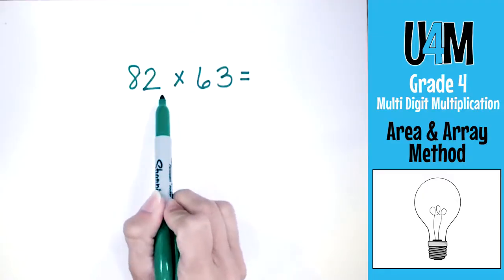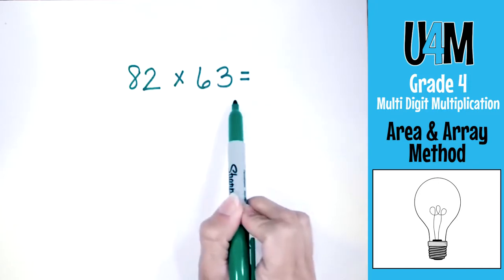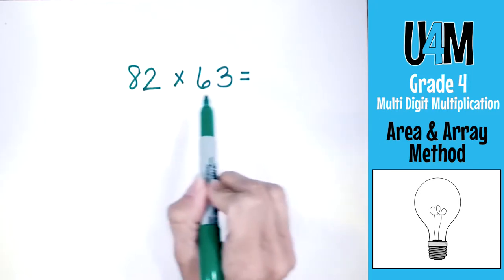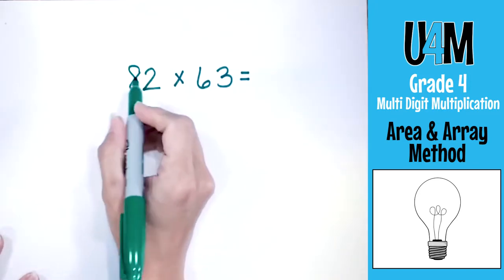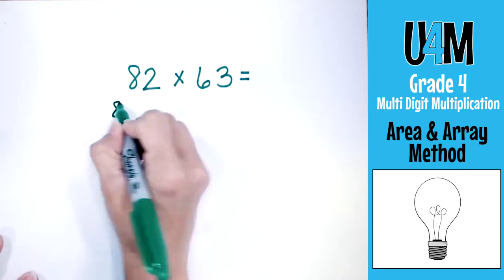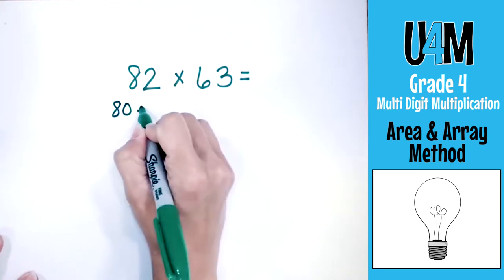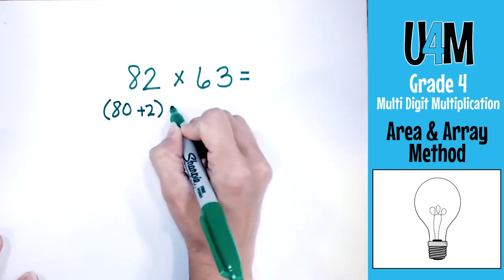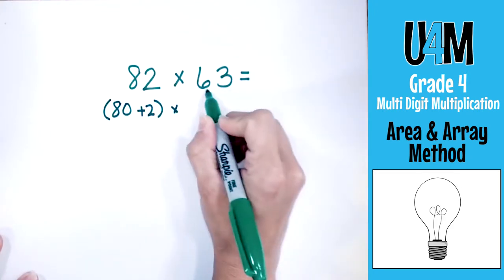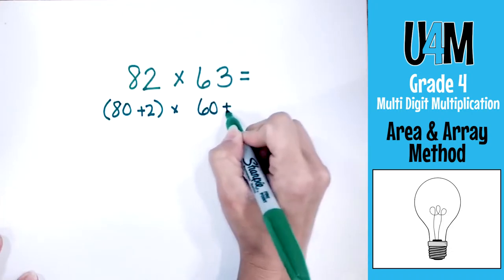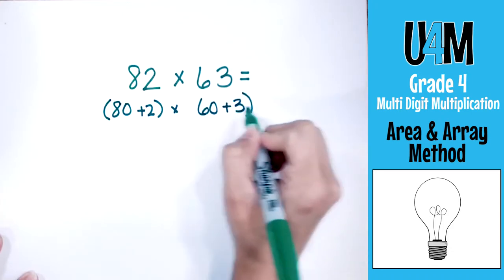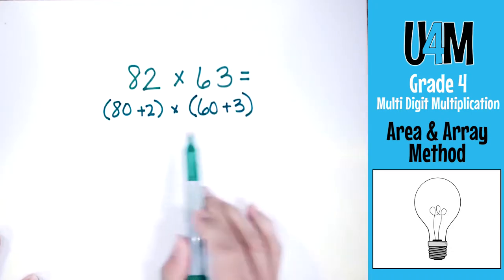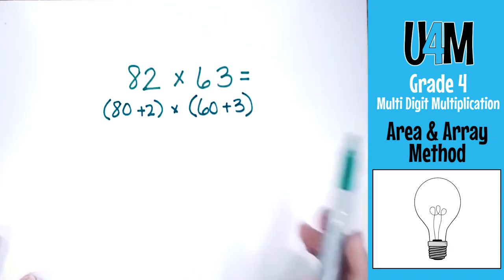Let's take a look at a larger problem with two-digit by two-digit numbers. In this problem we have 82 times 63. We're going to decompose both of those numbers, so 82 becomes 80 plus 2, and we're going to multiply that by 60 plus 3. It's simple expanded form.